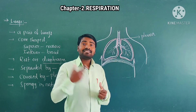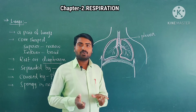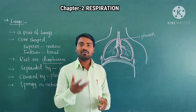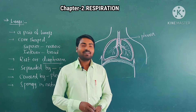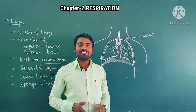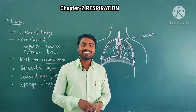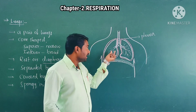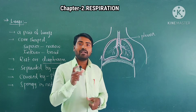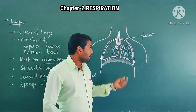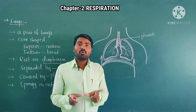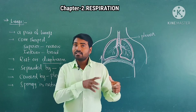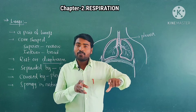The right lung is somewhat larger than the left one. The right lung is divided into three lobes. Why is the left lung smaller? Because it needs to provide space for the heart, as most of the heart's area is tilted toward the left side.